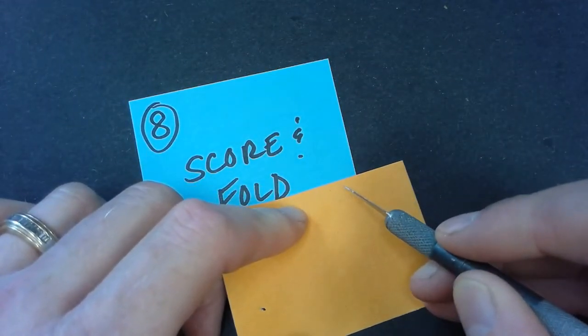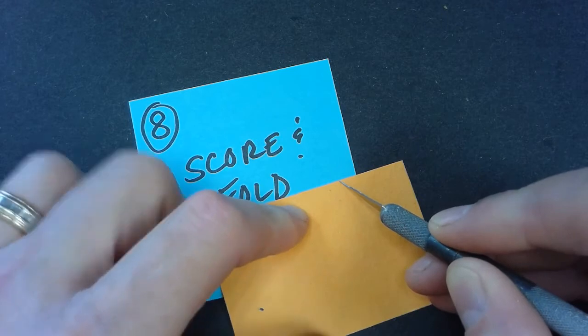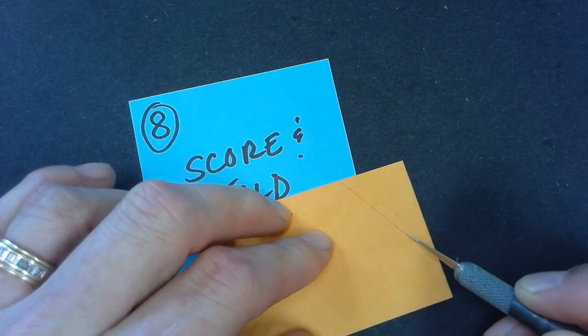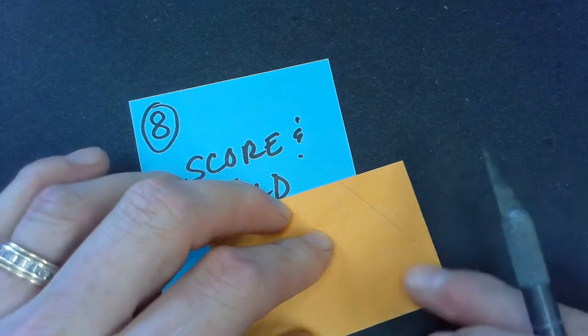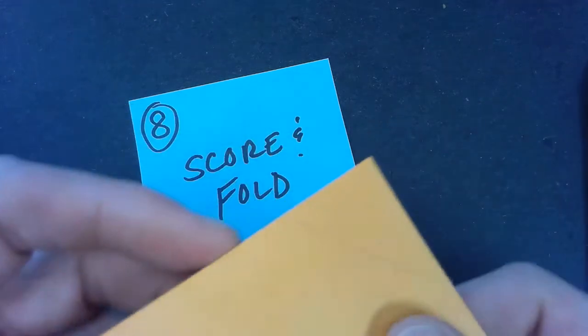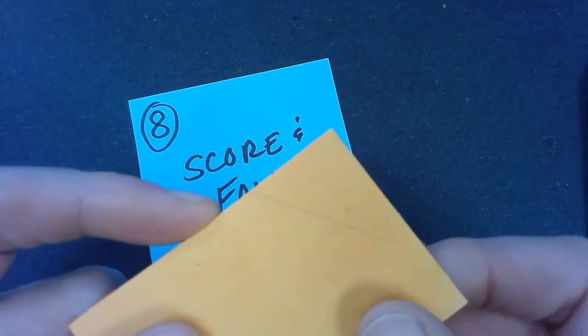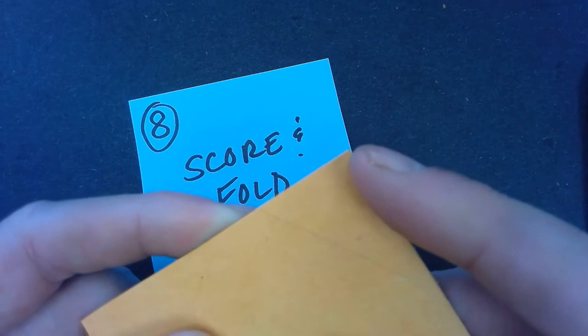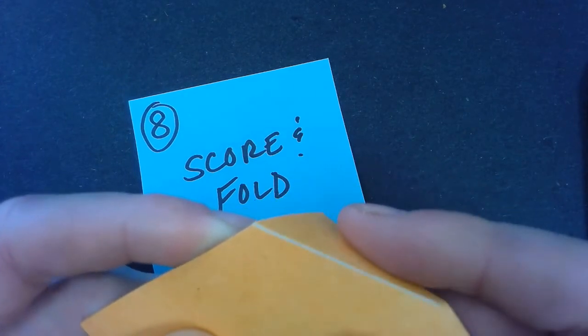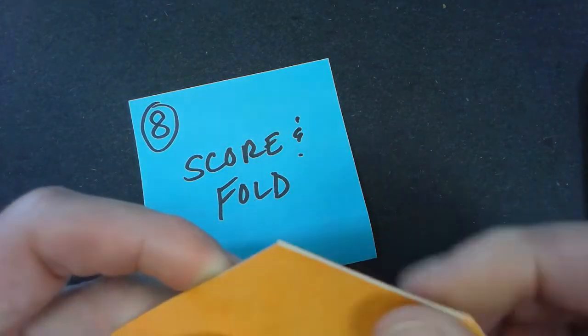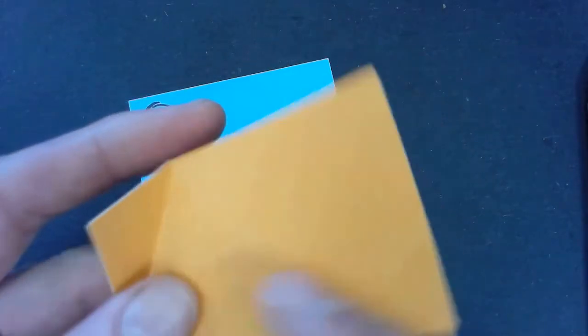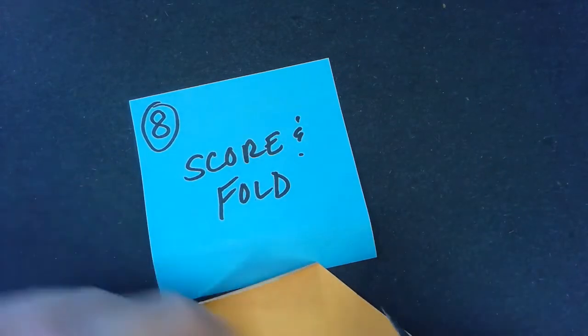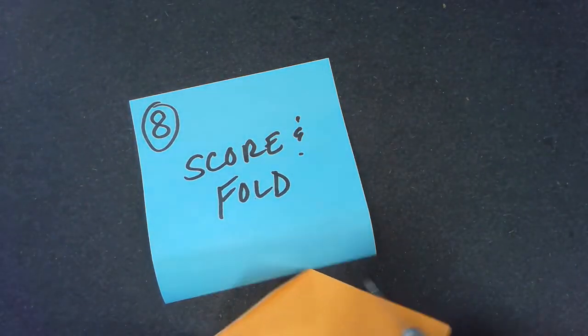And the way that you would do that is by taking an exacto knife and scoring the surface. So when you're scoring the surface, you're just making a cut. It's not very deep in the surface of the paper. So if I show a close-up of that, you can see that it just looks like a scratch, but it allows me to bend the paper and kind of manipulate where that paper is going to fold.